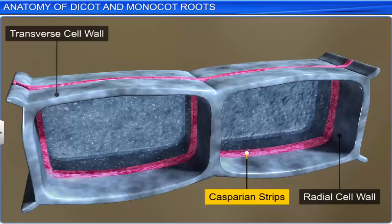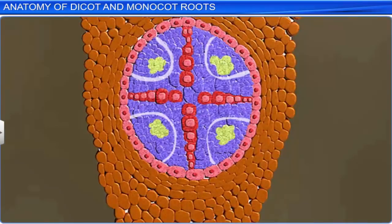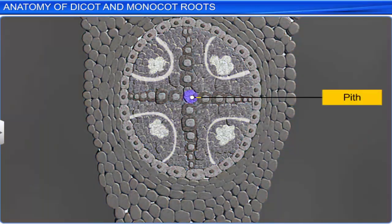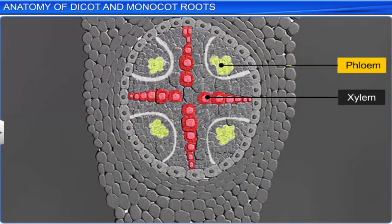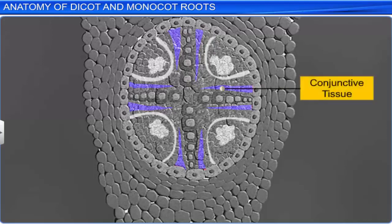After the endodermis, a few layers of thick-walled parenchymatous cells are present in the tissue. This is known as the pericycle. Secondary growth such as initiation of lateral roots and vascular cambium takes place in the cells of the pericycle. The pith in the dicot root is extremely small and undeveloped. Typically, there are two to four xylem and phloem patches in a dicot root. In the later stages, a cambium ring gets formed between the xylem and the phloem. Some radially arranged parenchymatous cells found between the vascular bundles form the conjunctive tissue, which is specialized for storage of water.